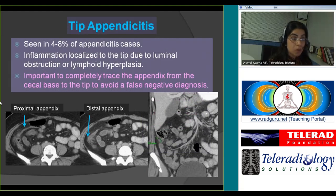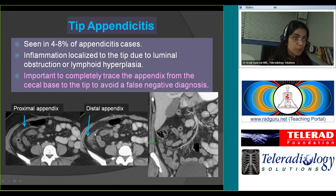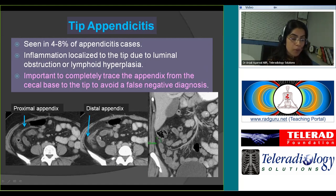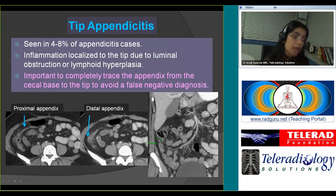Tip appendicitis is seen in about 4 to 8% of appendicitis cases. The inflammation is localized to the distal tip of the appendix, due to luminal obstruction secondary to an appendicolith or lymphoid hyperplasia. Notice a normal-looking proximal appendix and a thickened fluid-filled distal appendix with fat stranding — the appendiceal tip measures 9.8 millimeters. It is very important to trace the entire appendix so we do not miss cases of tip appendicitis, as these can be quite subtle in patients with very long appendices.